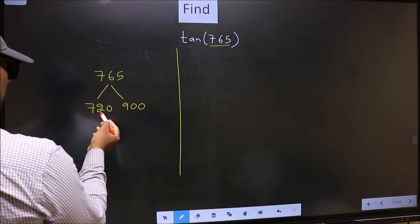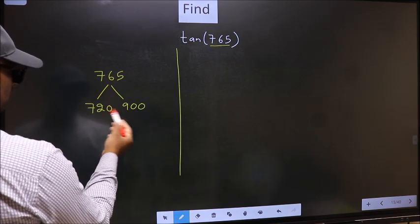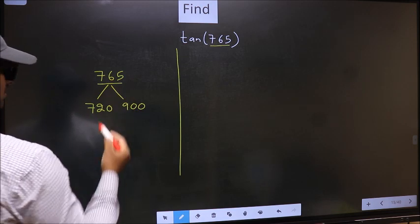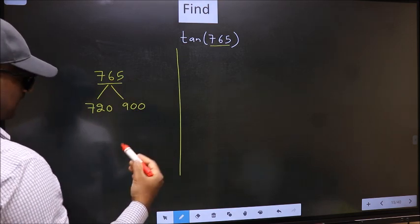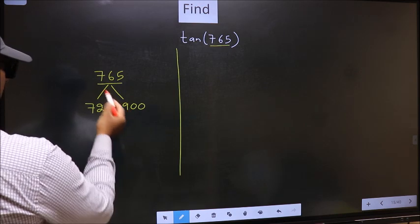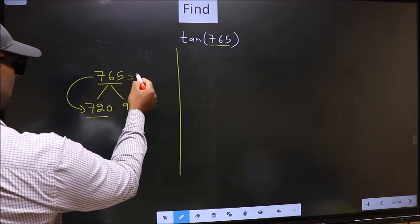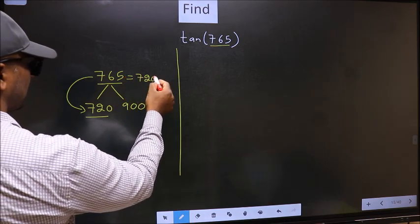This is 180 times 4 and this is 180 times 5. Between these two numbers 765 lies. Next, 765 is close to which number? This is close to 720. So in place of this, now we should write 720 plus 45.